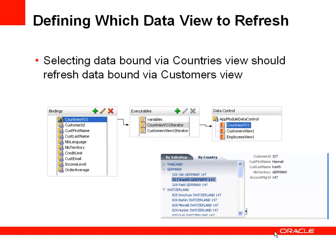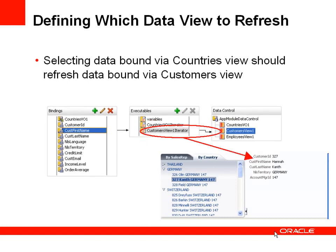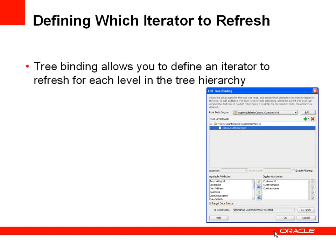Behind the scenes, when a country is selected and a particular customer in that country is selected, we want to force the iterator associated with the customer view to be refreshed. ADF gives us a feature for the tree control where for each node you can define an EL expression pointing to an iterator in the binding that should be refreshed whenever you select that node. So selecting the customers node within the employees or sales rep view will force the refresh of another iterator within that binding.